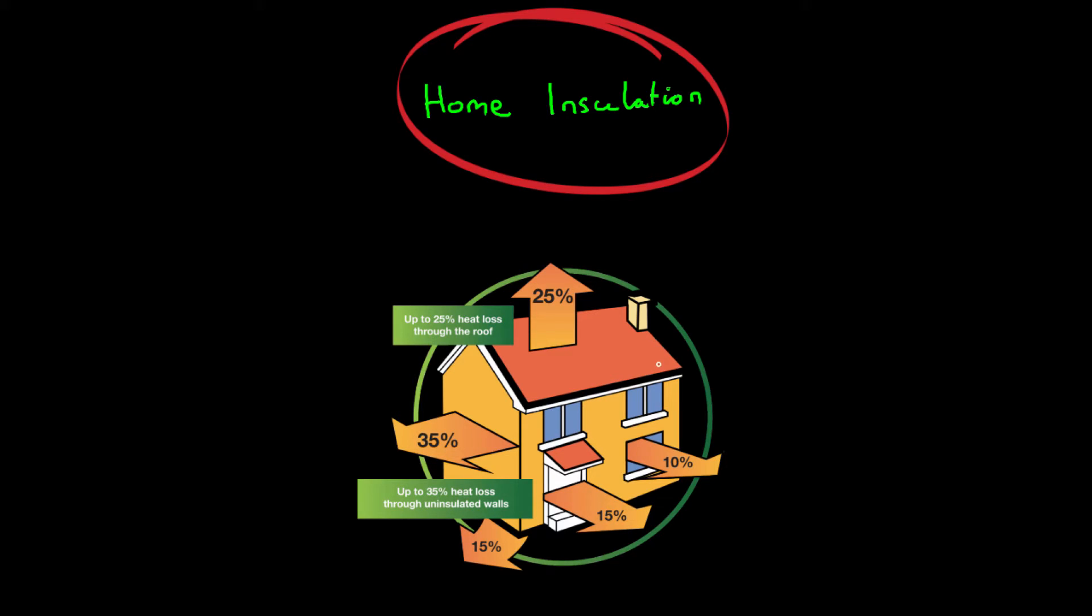Now we're going to have a look at the different types of insulation which are going to try and reduce this. And the first one is of course loft insulation. This is extremely important as you know hot air rises and your loft and your roof are on the top of your house.